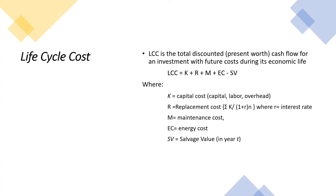Life cycle cost is the total discounted present worth cash flow for an investment with future costs during its economic life. The formula is: LCC = K + R + M + EC − SV, where K is capital cost, R is replacement cost expressed as the sum of each cost divided by (1 + r) raised to the power N where r is the interest rate, M is maintenance cost, EC is energy cost, and SV is salvage value in year T.